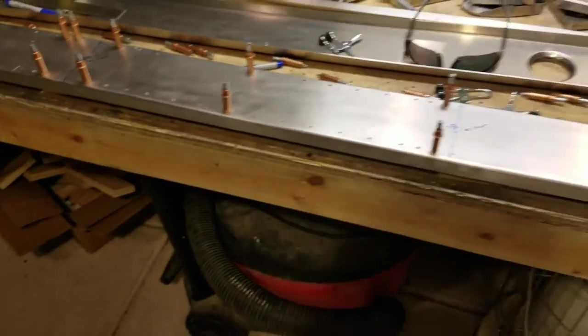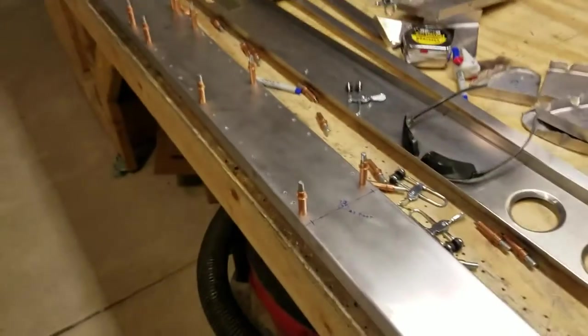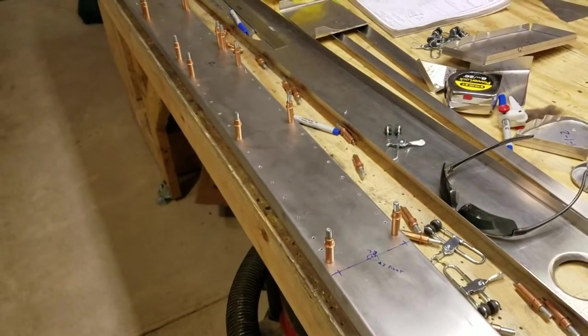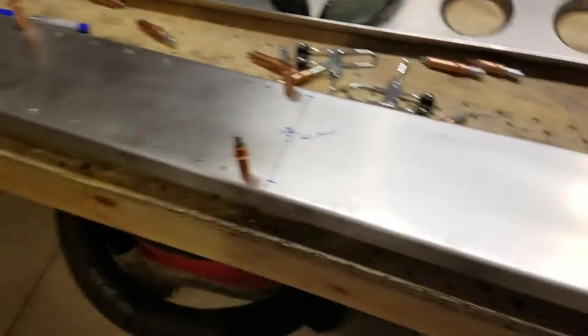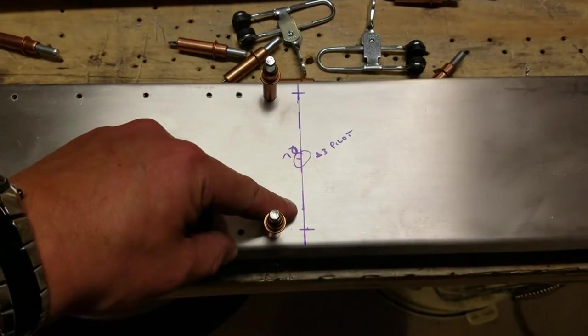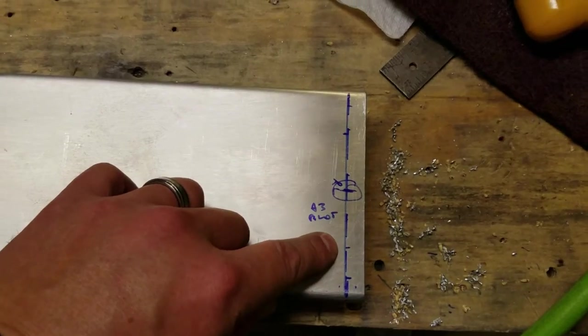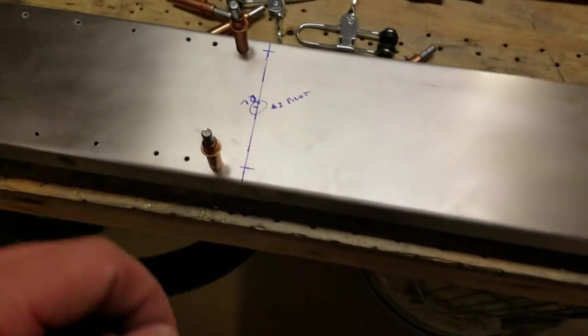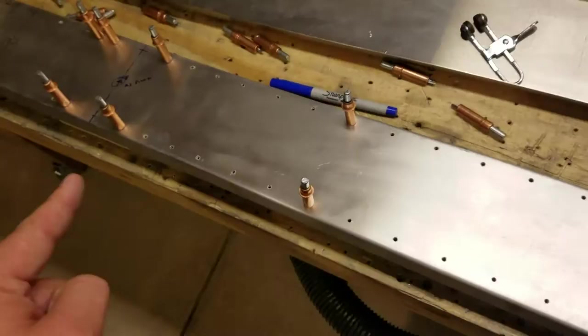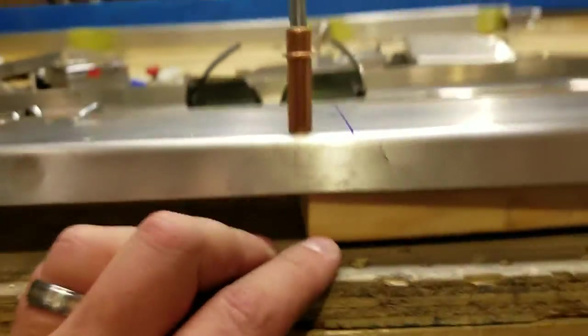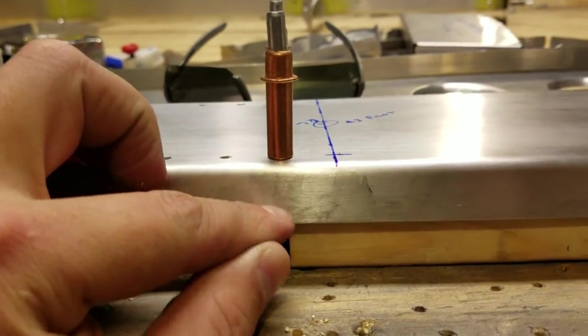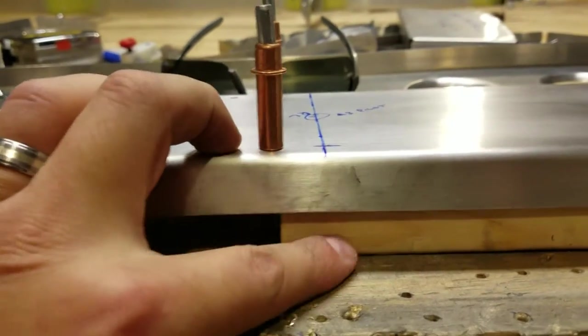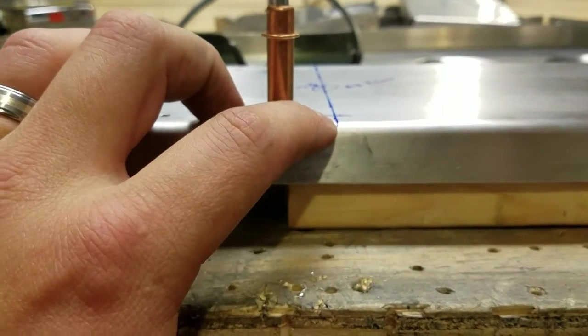Continuing with the rear spar on the horizontal stabilizer, you can see that after I did the initial drilling for the doublers, I have flipped it over to drill from the backside. I'm going to be drilling from this direction. So I had to flip the Cleco's around and then put a block of wood, just a chunk of 2x4, underneath the part that I'm going to be drilling.